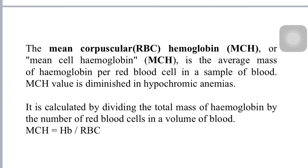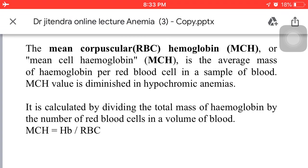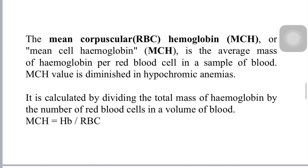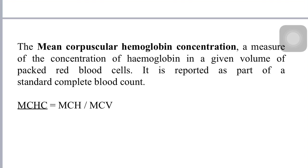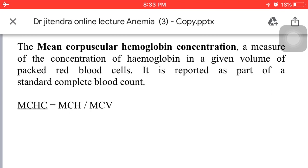Mean Corpuscular Hemoglobin (MCH) is the average mass of hemoglobin per red blood cell in a sample of blood. MCH value is diminished in hypochromic anemia. It is calculated by dividing the total mass of hemoglobin by the number of red cells in a volume of blood: MCH = Hb / RBC. Mean Corpuscular Hemoglobin Concentration (MCHC) is a measure of the concentration of hemoglobin in a given volume of packed red blood cells, reported as part of a standard complete blood count: MCHC = MCH / MCV.